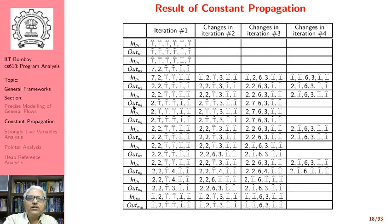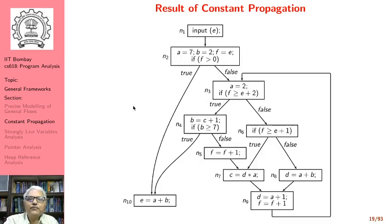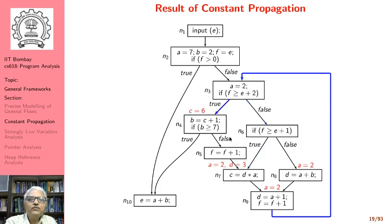Therefore, to simplify the matter we use a basic block with a single statement. Here is the result of constant propagation — I will leave it for you to work out and see if you get the same result. You should contact your TA if you find something different. We find a = 2, which flows to give a = 2 and d = 3, and eventually c = 6.